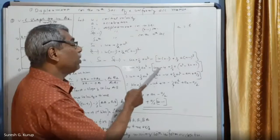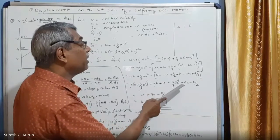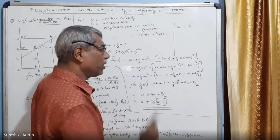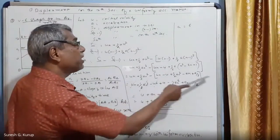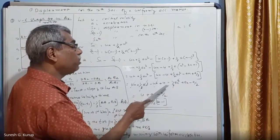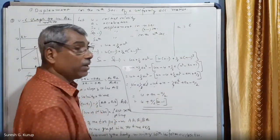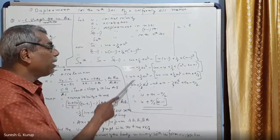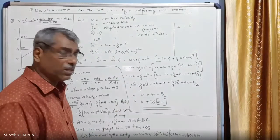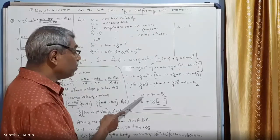Continuing the simplification: un + ½an² minus un + u minus ½an² + an minus ½a. The like terms cancel — un minus un cancels, ½an² minus ½an² cancels. What remains is u + an minus a/2.